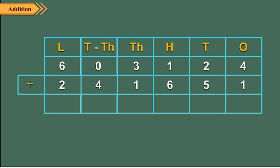As usual, we arrange the numbers in columns. We start adding the ones digits: 4 ones plus 1 one is equal to 5 ones. Write 5 in the ones column. Add tens: 2 tens plus 5 tens is equal to 7 tens. Write 7 in the tens place. Add hundreds: 1 hundred plus 6 hundreds is equal to 7 hundreds. Write 7 in the hundreds place.